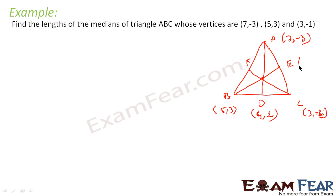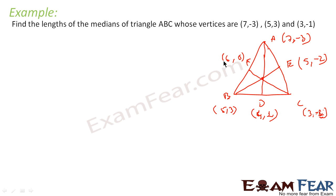Point E is the midpoint of AC: ((7+3)/2, (-3-1)/2) = (5, -2). Point F is the midpoint of AB: ((5+7)/2, (3+(-3))/2) = (6, 0). Now we have to find the lengths of medians AD, BE, and CF using the distance formula.